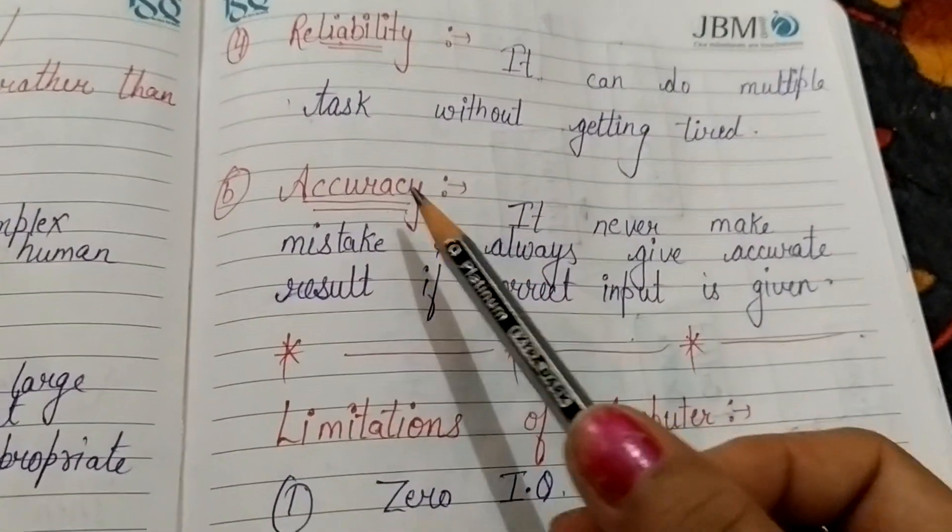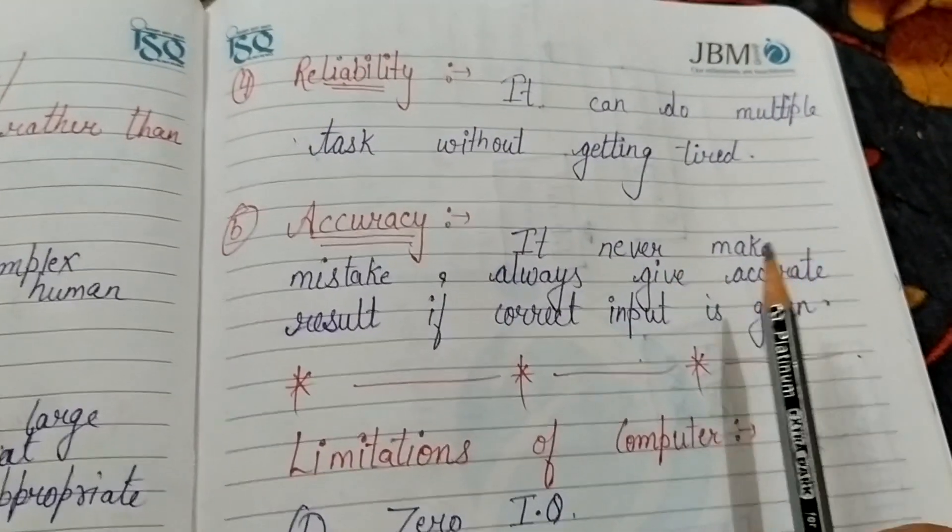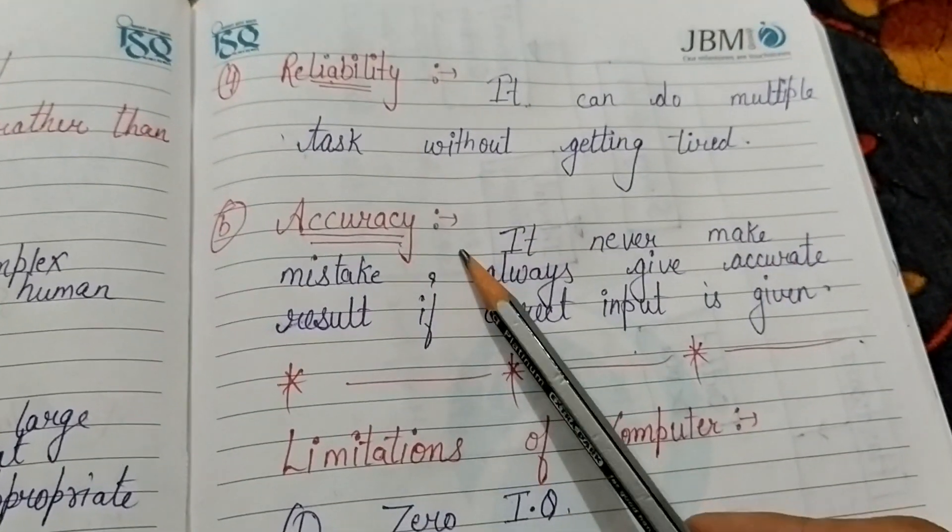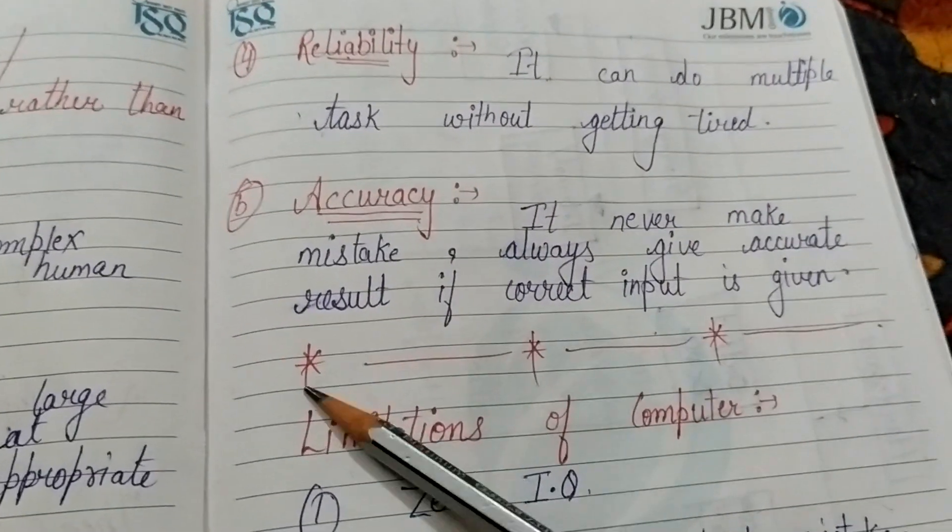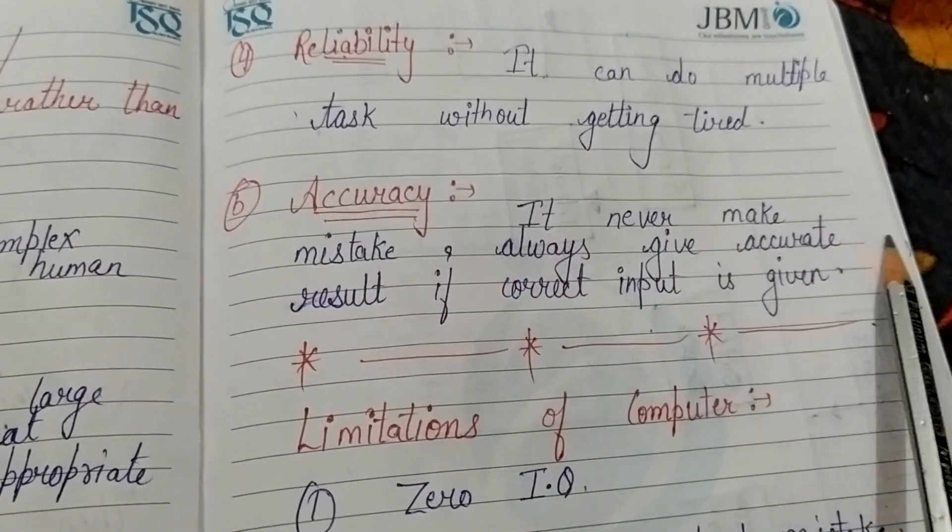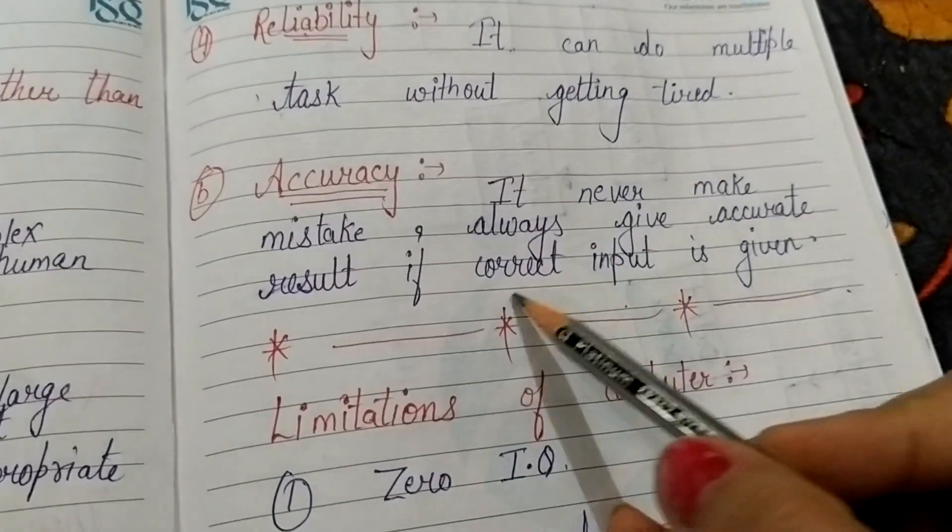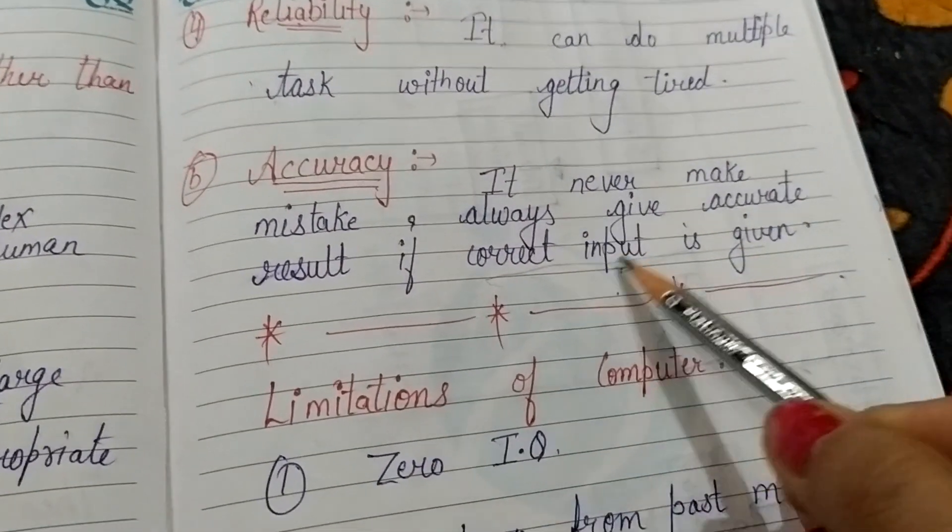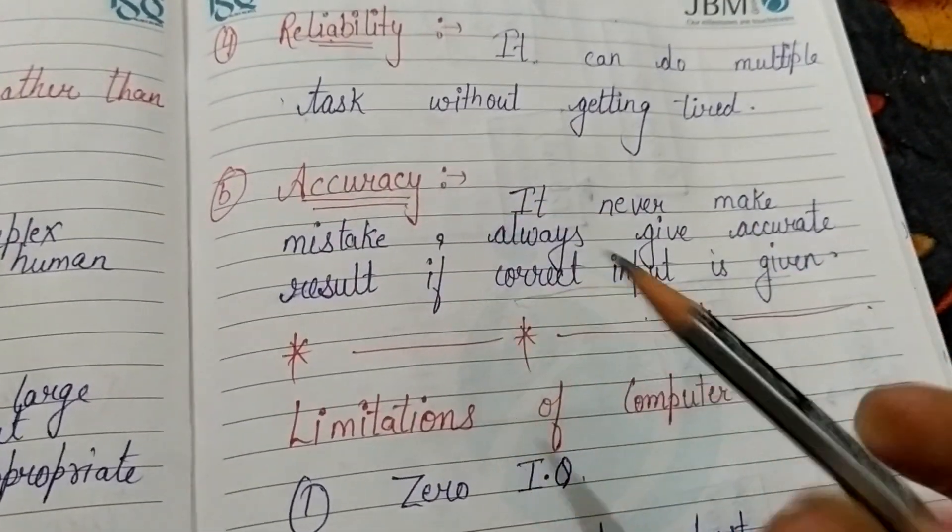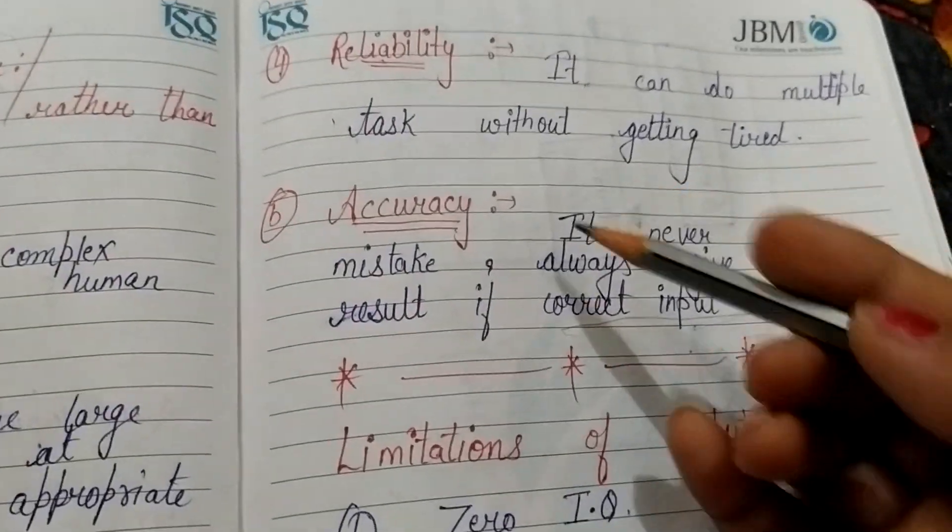Then our next point is accuracy. Accuracy means accurate—computer never makes any mistake. It gives us accurate results if correct input is given. You must add this line: if we give correct input, then it will give us correct output too.